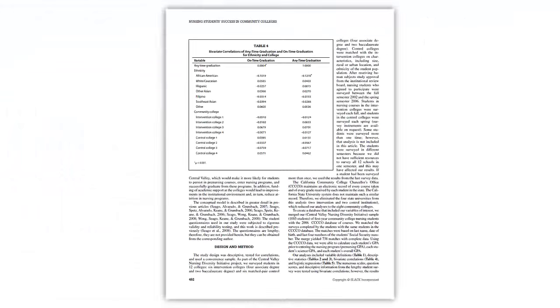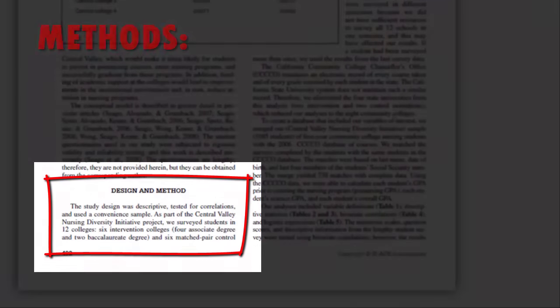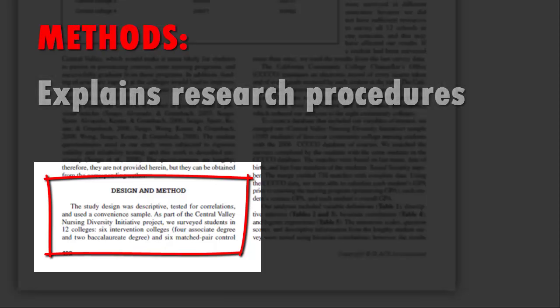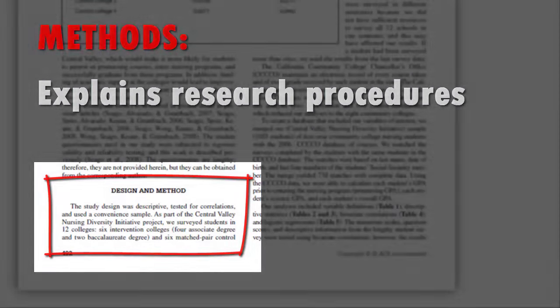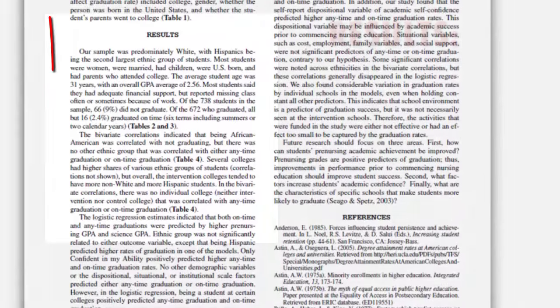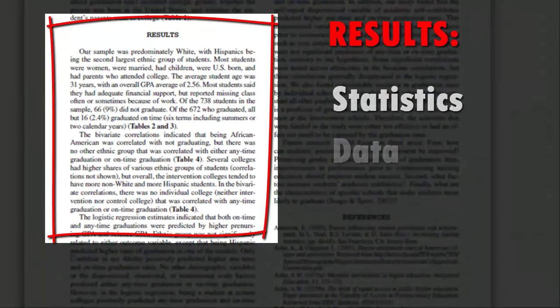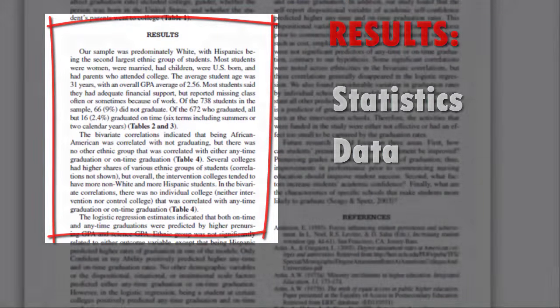The Methods or Methodology portion of the article explains the exact procedures followed when conducting the research. The Results portion of the article includes statistics or data obtained from the study.